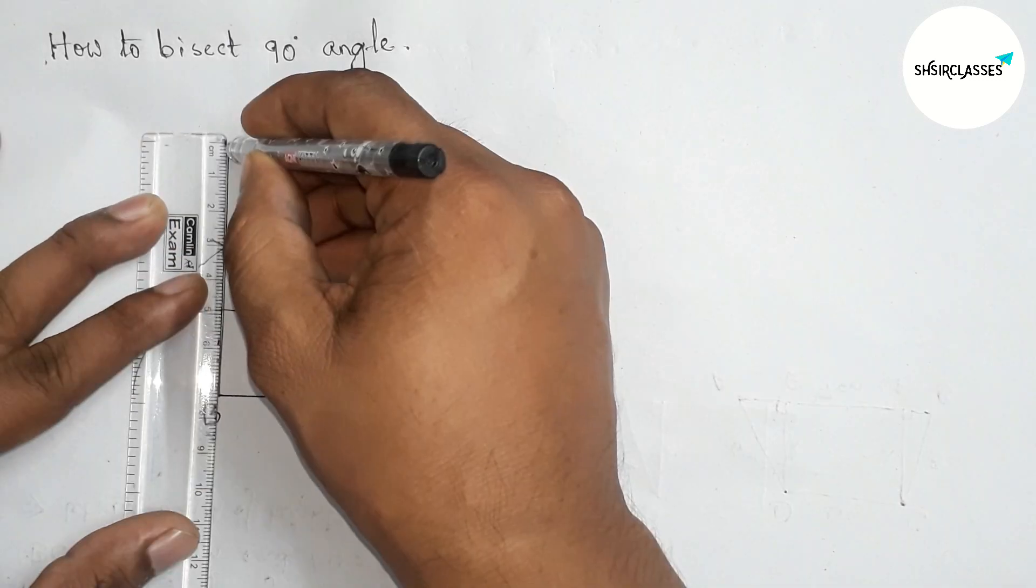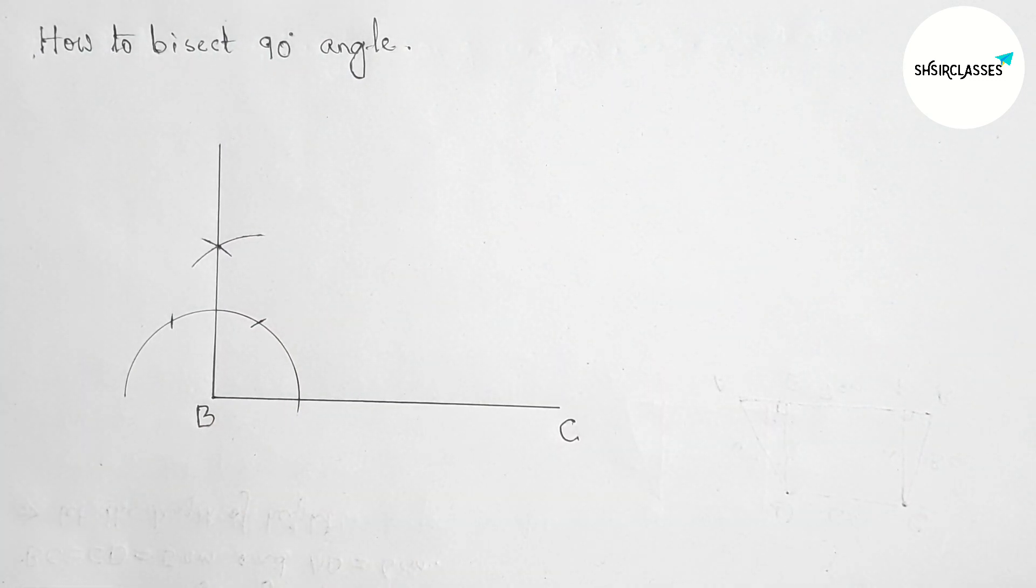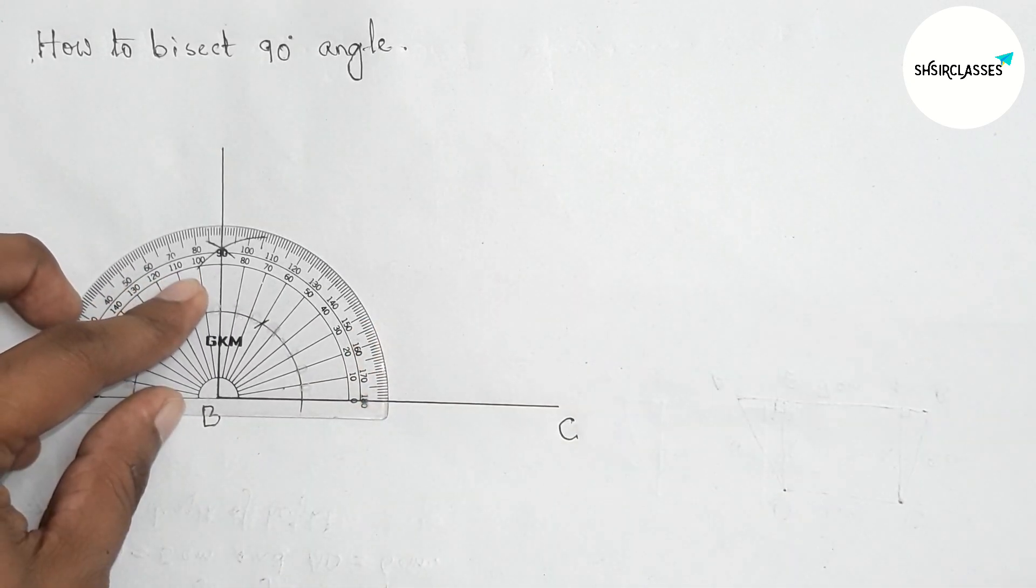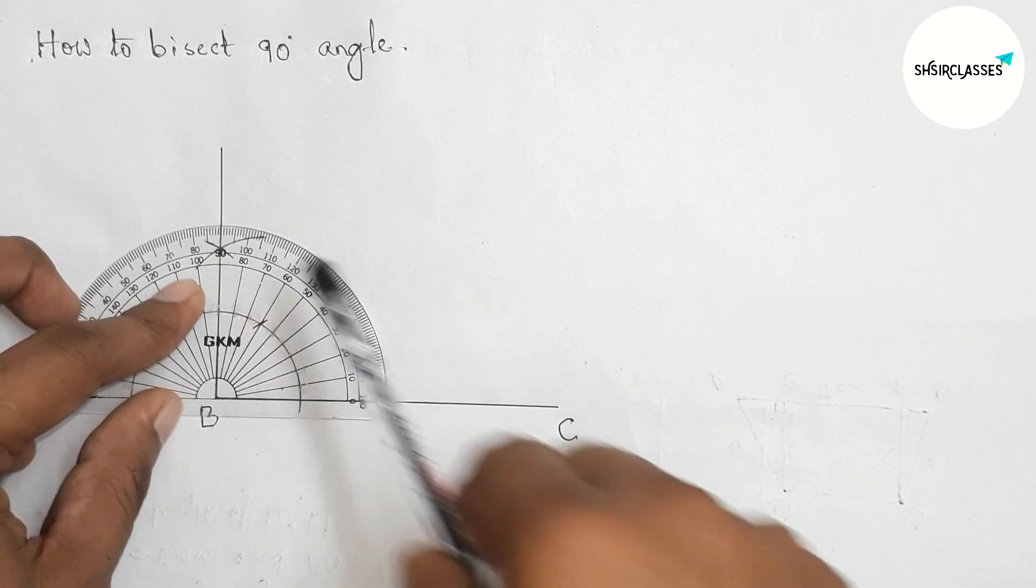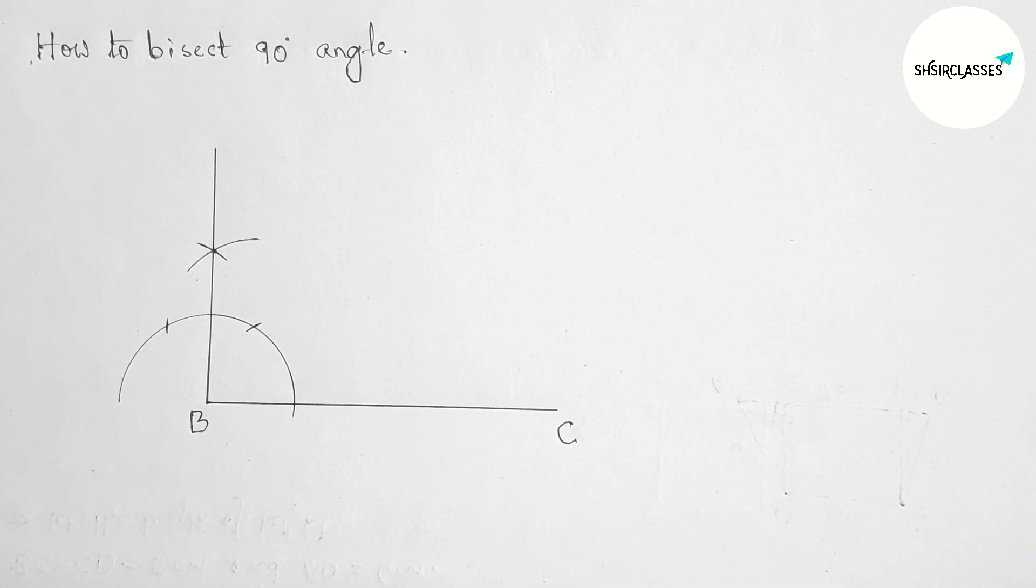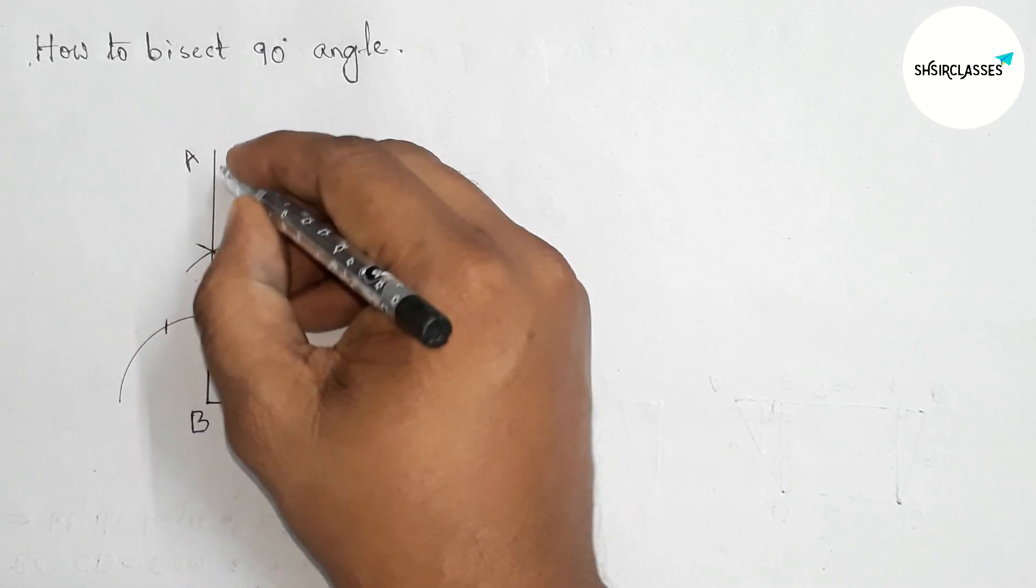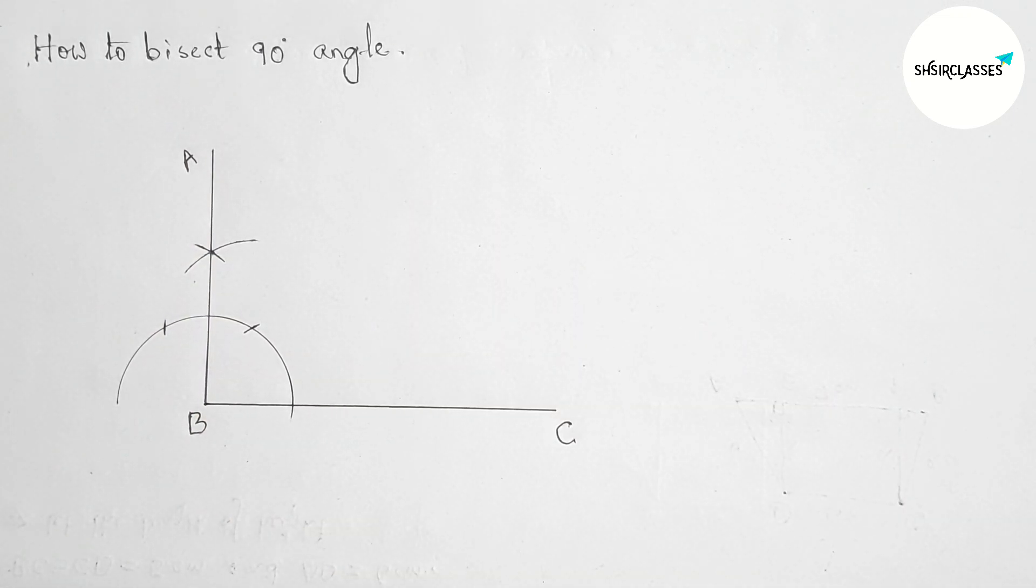Next, joining this line. Now I am going to check whether it is 90 or not. This is perfectly a 90-degree angle. Taking here point A, so angle ABC is 90 degrees. Now bisecting angle ABC.